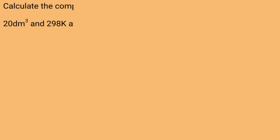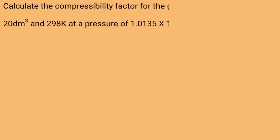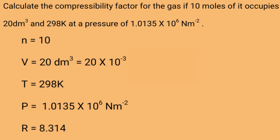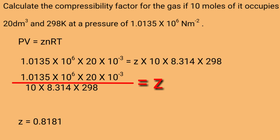Numerical: Calculate the compressibility factor of a gas if 10 moles occupy a volume of 20 dm³ at a pressure of 1.0135 × 10⁶ N/m². Given: P = 1.0135 × 10⁶ N/m², V = 20 dm³ = 20 × 10⁻³ m³, n = 10 moles, T = 298 K, R = 8.314. Substituting into PV = ZnRT, the value of Z is calculated as 0.8181.